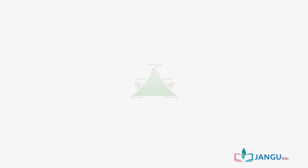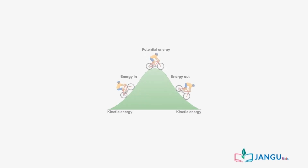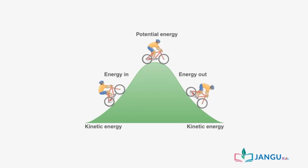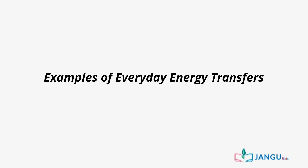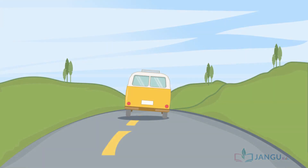An object has energy if it can exert a force that causes movement of the point of application of the force. Here are some examples of everyday energy transfers. Our first example is a bus that accelerates away from a bus stop and then maintains a steady speed. As the bus speeds up, the energy stored from the fuel and oxygen system of the bus is transferred into kinetic energy due to the motion of the bus.